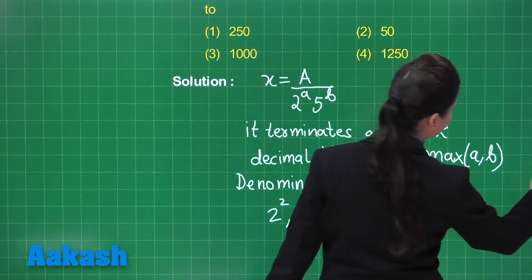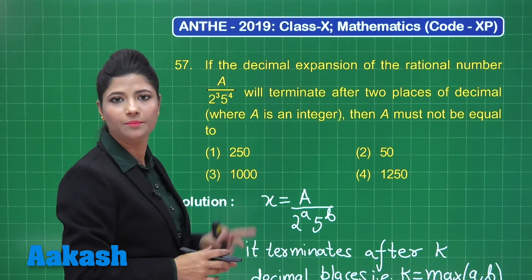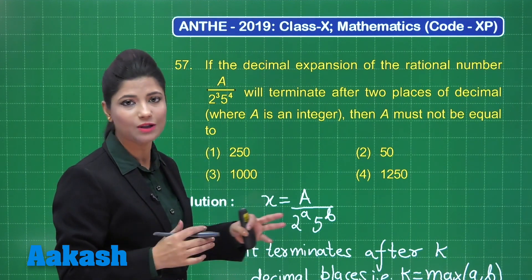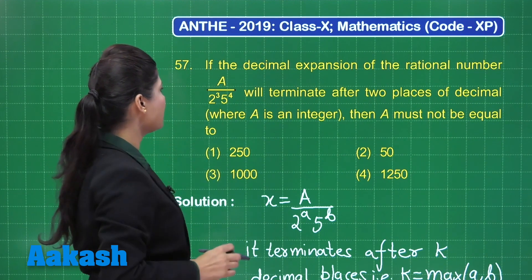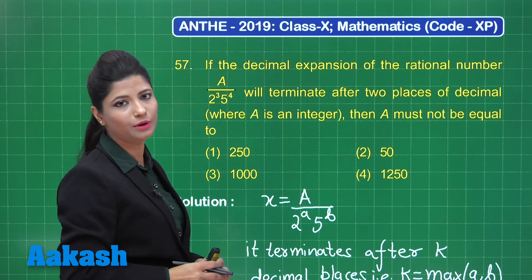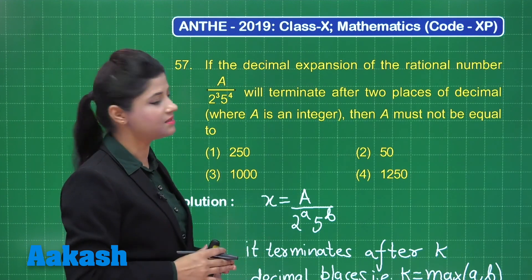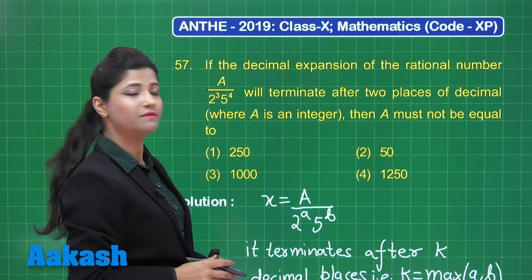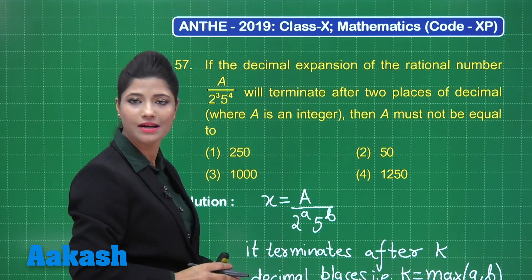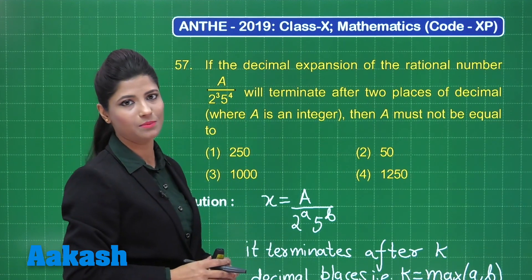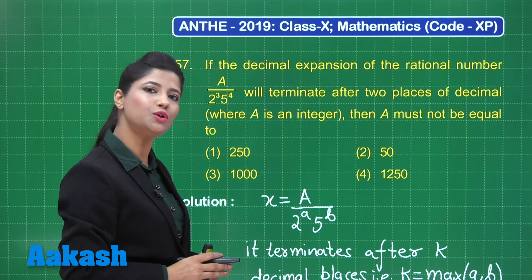Checking the options to see which value of A must NOT work: option 1 is 250, which factorizes as 5³ × 2. Substituting gives 1/(2² × 5), and the denominator's highest power is 2 — justified. Option 2 is 50, which simplifies as 2² × 5². Substituting gives 1/(2 × 5²), and it still terminates after 2 decimal places — also justified.